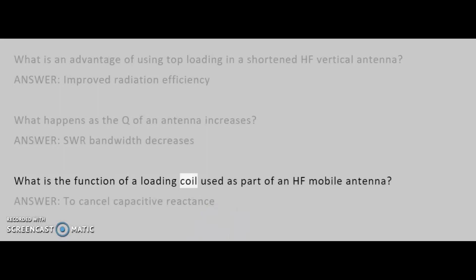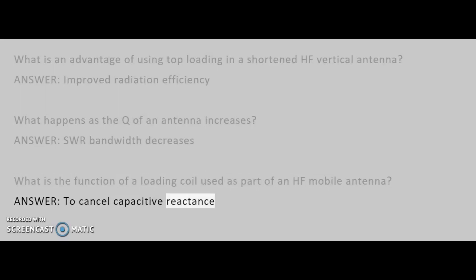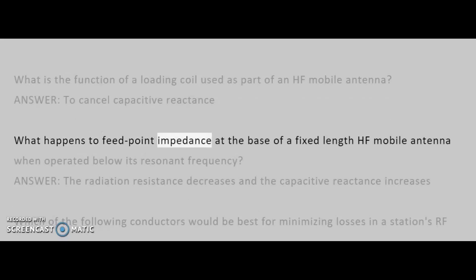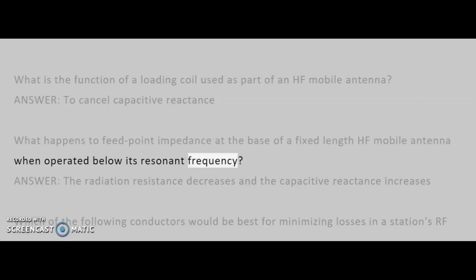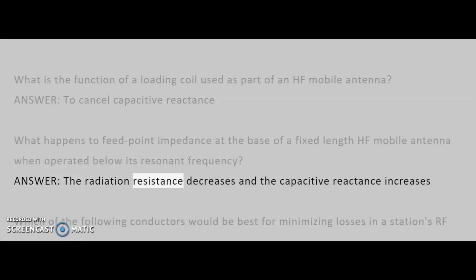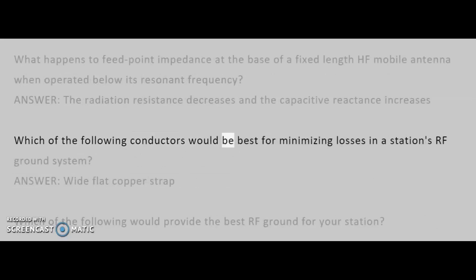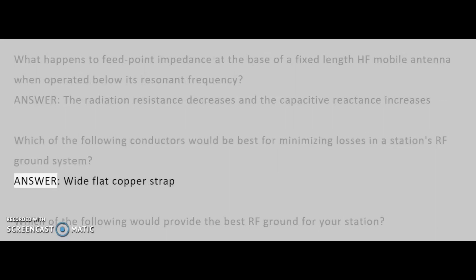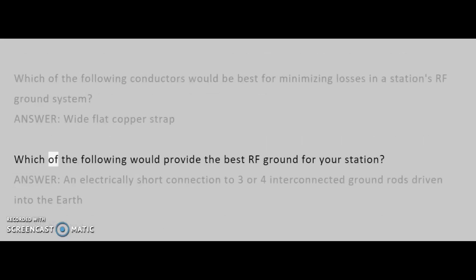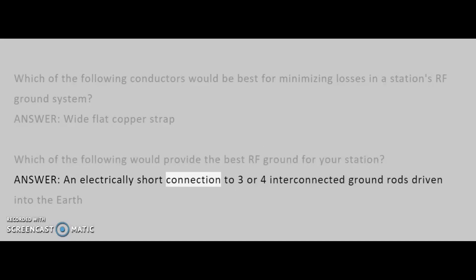What is the function of a loading coil used as part of an HF mobile antenna? Answer: to cancel capacitive reactance. What happens to feed point impedance at the base of a fixed-length HF mobile antenna when operated below its resonant frequency? Answer: the radiation resistance decreases and the capacitive reactance increases. Which of the following conductors would be best for minimizing losses in a station's RF ground system? Answer: wide flat copper strap. Which of the following would provide the best RF ground for your station? Answer: an electrically short connection to three or four interconnected ground rods driven into the earth.